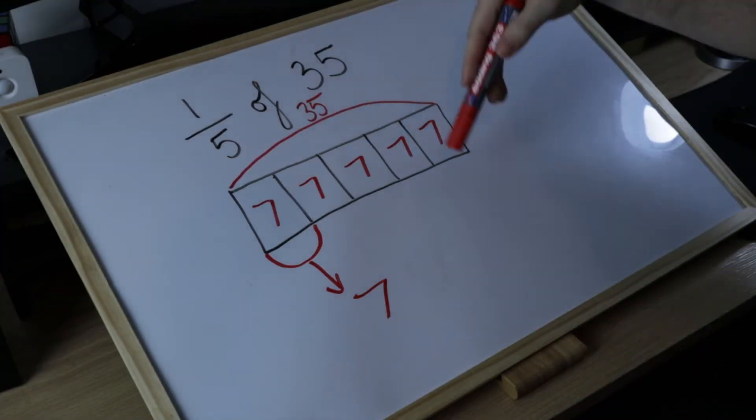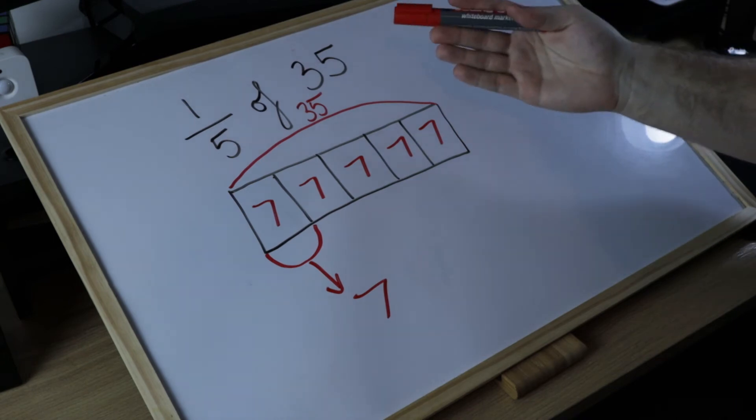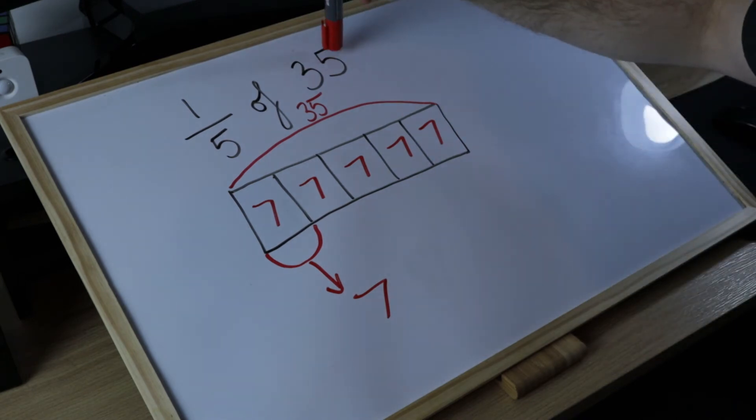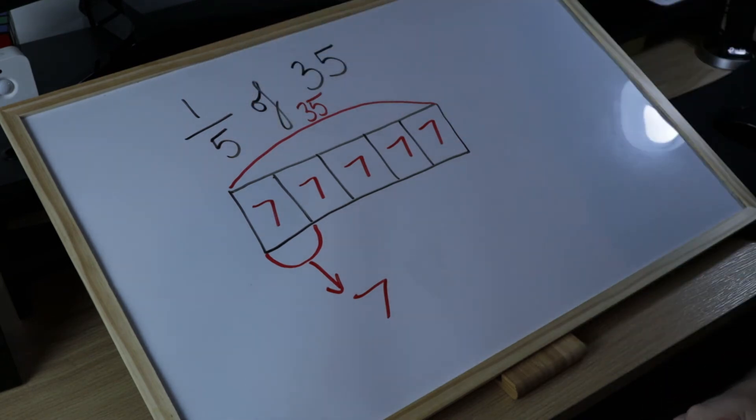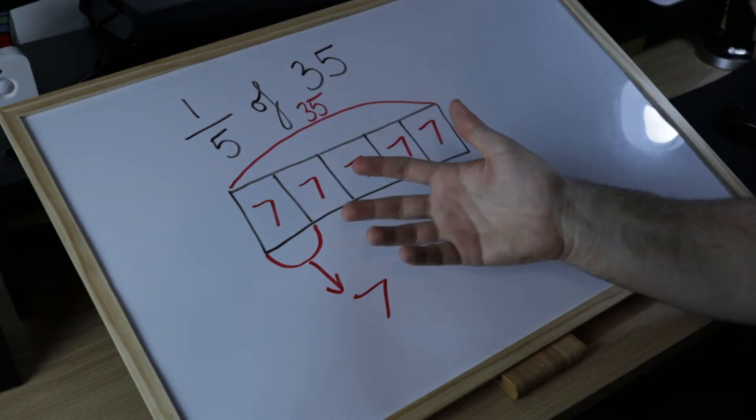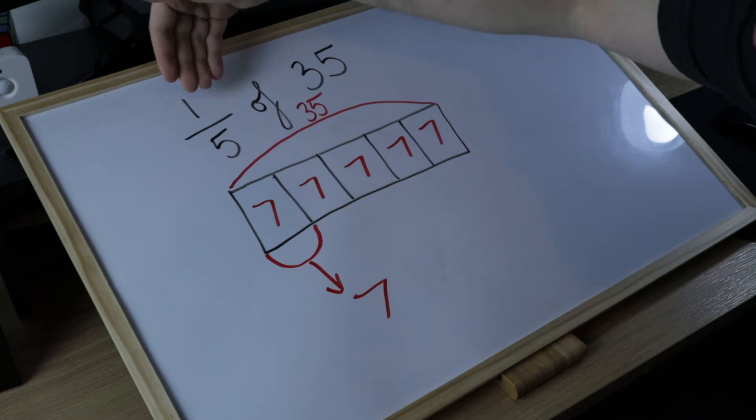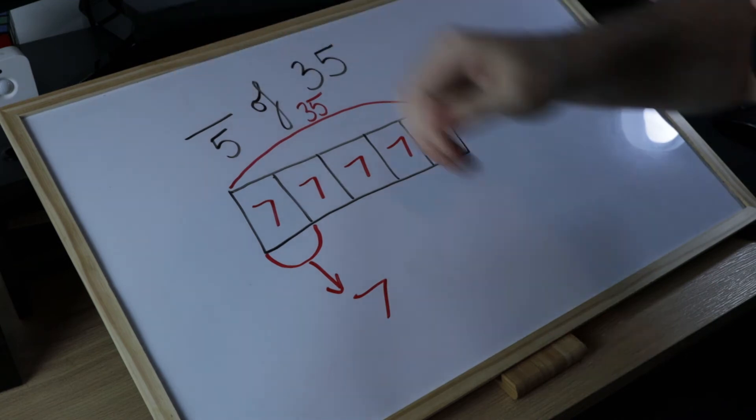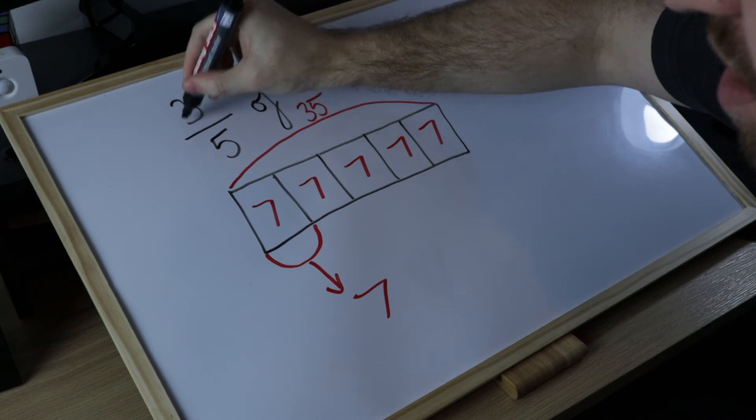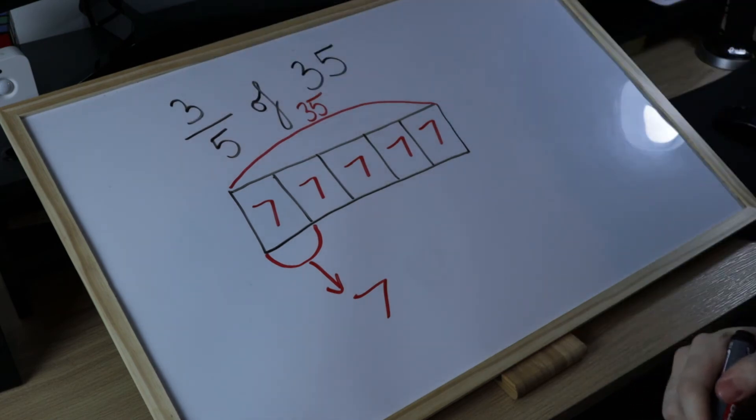Now this works for any unit fraction, but you might be thinking that's really straightforward. There's just one step: divide the whole by the denominator. 35 divided by five is seven. That's why your child is much more likely to receive a fraction which is not a unit fraction but instead a numerator that is bigger. For example, three-fifths of 35.